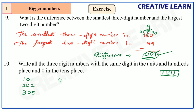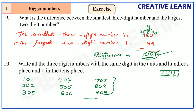Following the same pattern, the numbers are: 101, 202, 303, 404, 505, 606, 707, 808, and 909. In all these numbers, the units place and hundreds place have the same digit, and the tens place has 0.